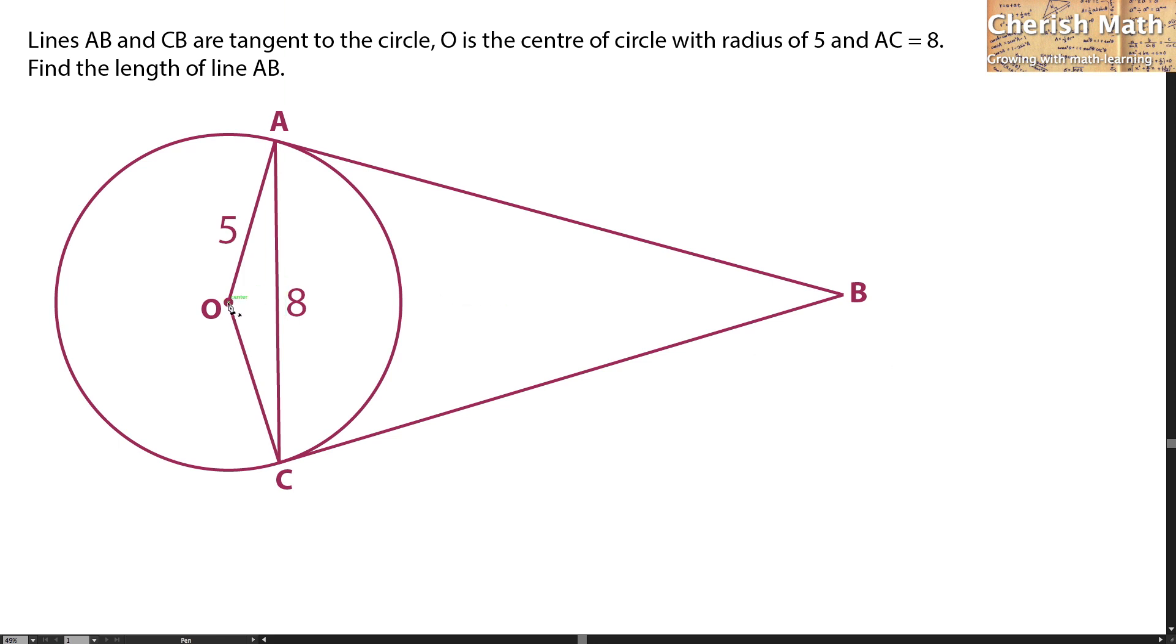Let me connect a line from center O to point B. This is how it looks. The length of AC is 8 units. Taking half of it gives 4.